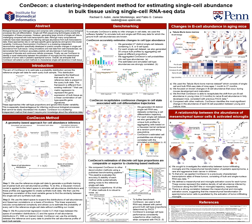Next, we used CondiCon to estimate dynamic cell abundances associated with well-characterized biological systems. For this, we used the Tablomeris bone marrow dataset, which consists of single-cell and bulk RNA-seq data of mice ages 1 month to 27 months. This is an ideal system for studying continuous changes in cell state associated with age-related processes. We find that CondiCon is able to identify a gradual shift from early pro-B cell abundance in young mice less than or equal to 3 months of age to naive B cell abundance in fully developed mice, consistent with previous FACTS data.